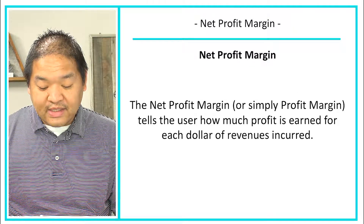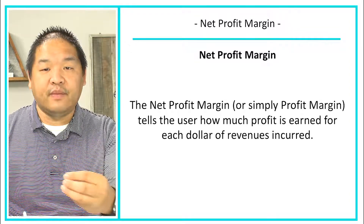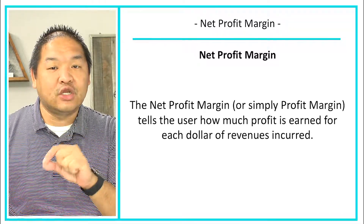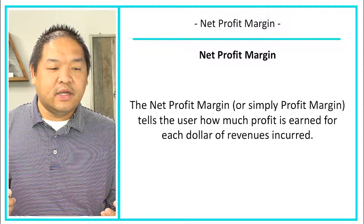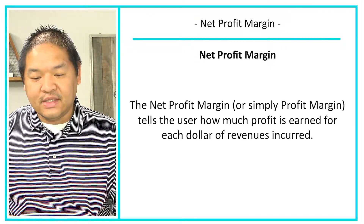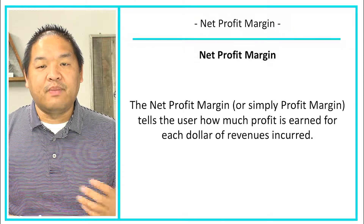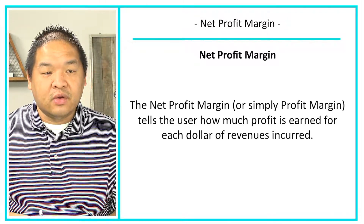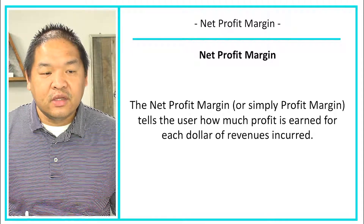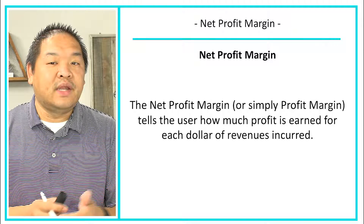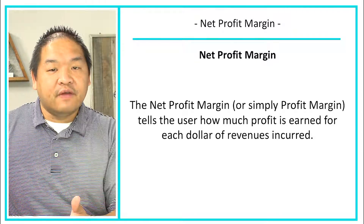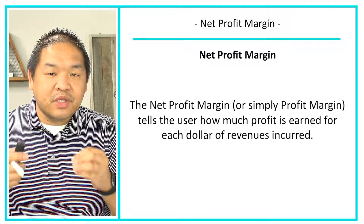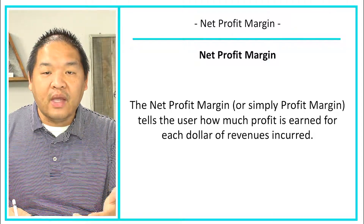The net profit margin — or simply the profit margin — tells the user how much profit is being earned for each dollar of revenue. For example, you might take in a hundred dollars from a customer, but after all your expenses you only come up with a dollar — that's not so good. Whereas if you sell something for fifty dollars and your net profit margin is five dollars, that's a better efficiency use of a sale. So we're trying to see how much profit is actually earned for every one dollar of sales.